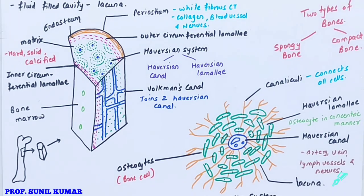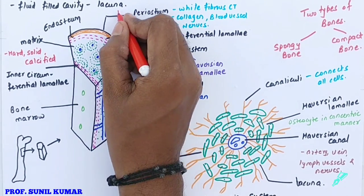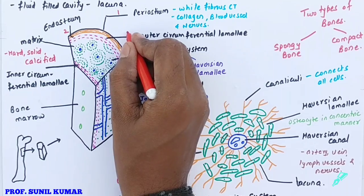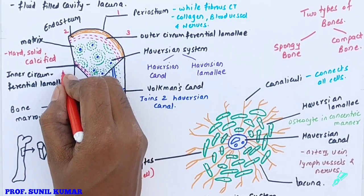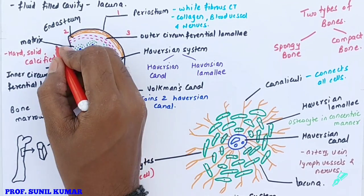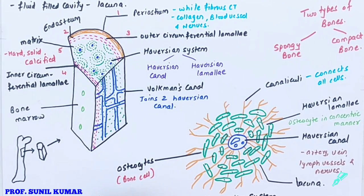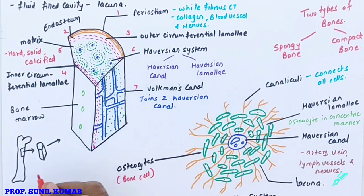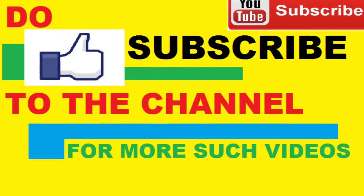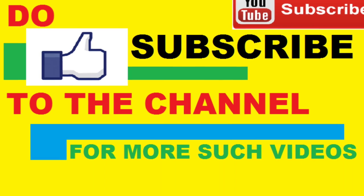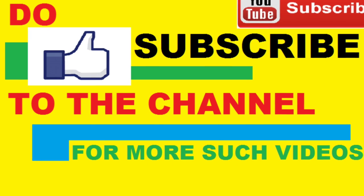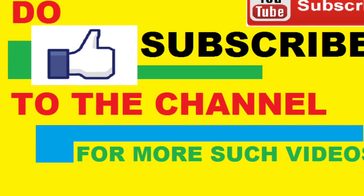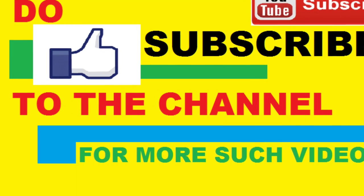For your exam, the key points to cover about bone are: periosteum, endosteum, matrix, Haversian system, Volkmann's canal, and Haversian canal. Study hard to achieve your goals.